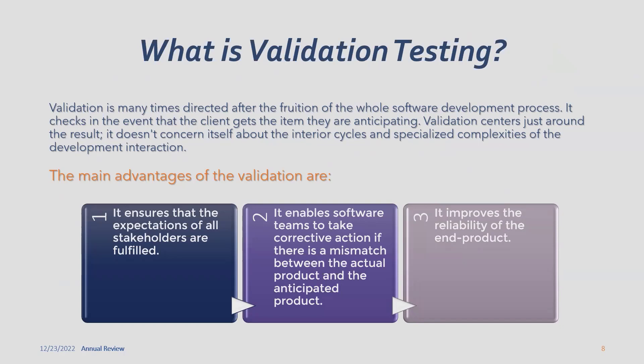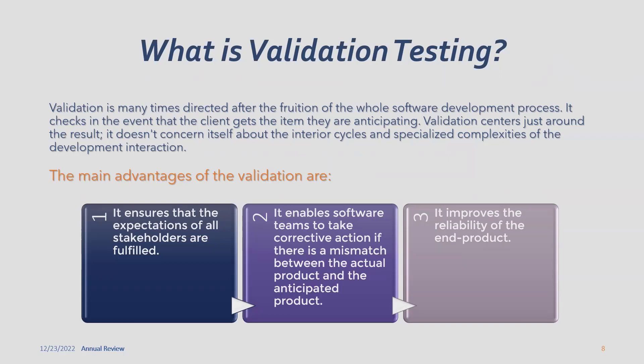Validation is performed after the completion of the whole software development process. It checks whether the client gets the product they are anticipating, focusing entirely around the result rather than the internal complexities of development. The main advantages of validation are that it ensures the expectations of all stakeholders are fulfilled, enables software teams to take corrective actions if there is a mismatch between the actual and anticipated product, and improves the reliability of the end product.